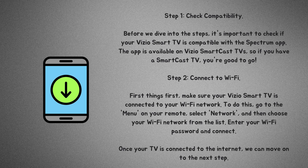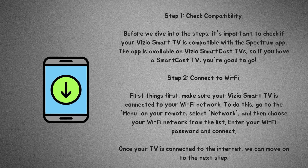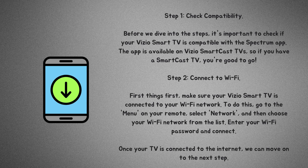Step 2: Connect to Wi-Fi. First things first, make sure your Vizio Smart TV is connected to your Wi-Fi network. To do this, go to the menu on your remote, select Network, and then choose your Wi-Fi network from the list. Enter your Wi-Fi password and connect. Once your TV is connected to the internet, we can move on to the next step.